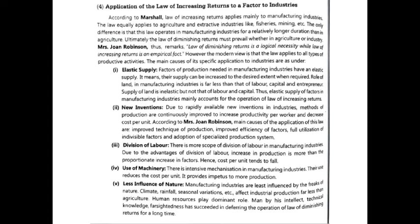Next is new innovations. Due to rapidly available new innovations, industries' methods of production continuously improve to increase productivity per worker. New innovations help industries increase output per worker and decrease per unit cost. Next is division of labor — there is more scope for division of labor in manufacturing industries. Division of labor increases production as variable factors increase, and efficiency improves according to different zones of production.